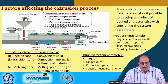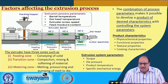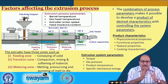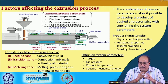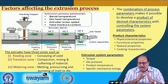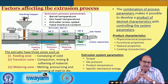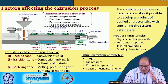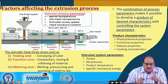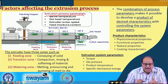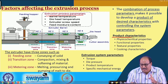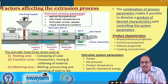Regarding factors affecting the extrusion process, by having an appropriate combination of the process parameters, we can produce a product of desired characteristics, as well as get the desired system parameters to achieve the desired characteristics in the product. The important extrusion process parameters include barrel temperature, die head temperature, extruder screw speed, and feed moisture content.